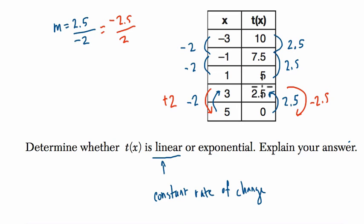So it doesn't matter which way you read this. Now you can say here that it is linear. You can explain it by saying it's linear because this function has a constant rate of change. And you can say that it is m equals 2.5 over negative 2.